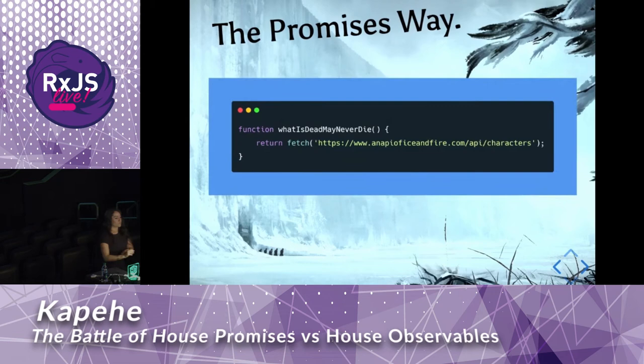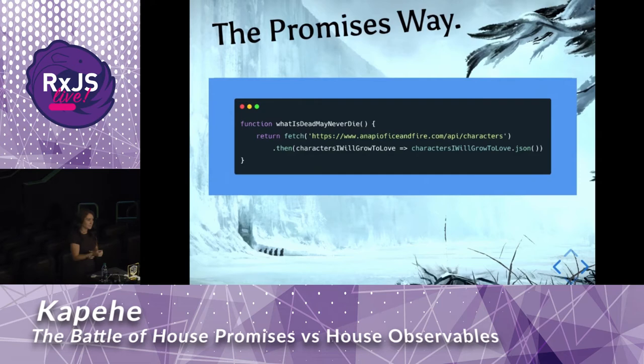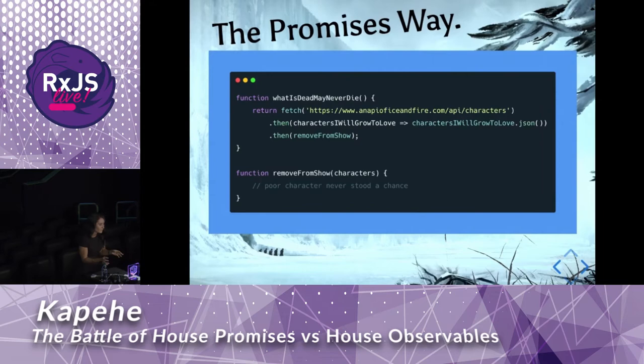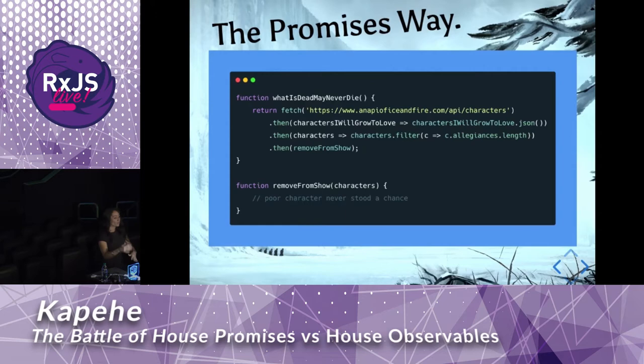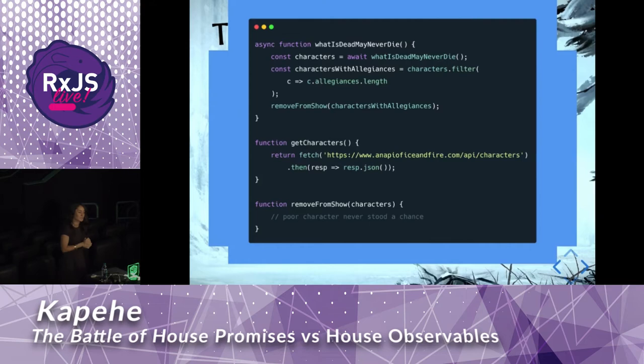Let's go over the promises way first. We need to grab data from an API — I'm using the Ice and Fire API. Since we are using JavaScript fetch, we need to unwrap our data. Now that we have the characters, we'll use them. As is tradition with George R.R. Martin characters, we're going to kill them off. Let's only remove the characters that have allegiance to one of the great houses, so now we're going to have to filter. We do have async/await, so we can remove the dot-thens if we want to use that syntax instead.